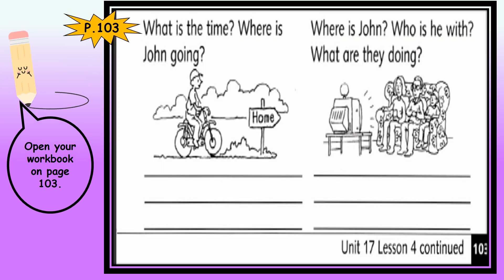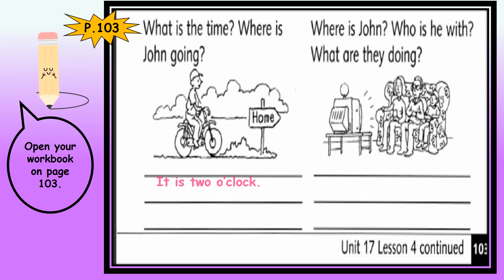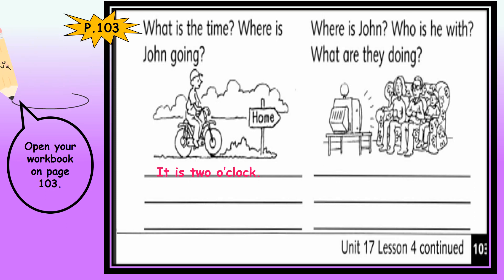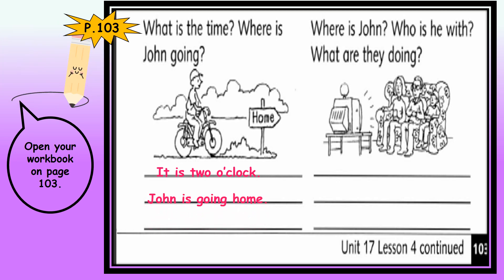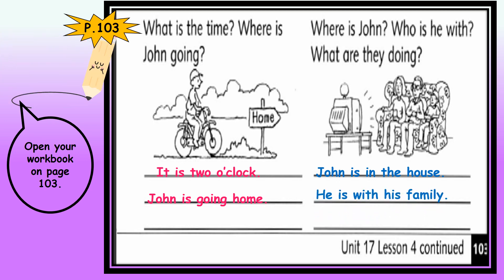How about the fifth picture — what is the time? Look at the word, there is 'home.' It is two o'clock. And where is John going? John is going home. How about the last picture — where is John now? John is in the house. And who is he with? He is with his family.